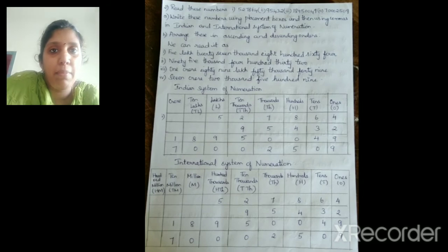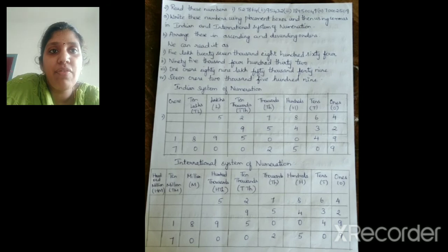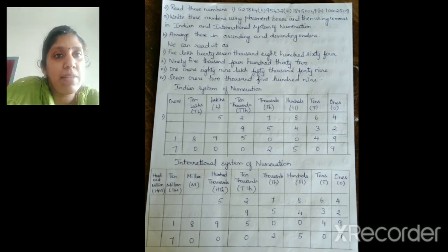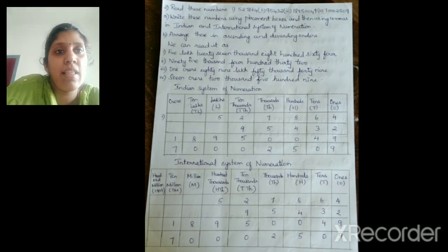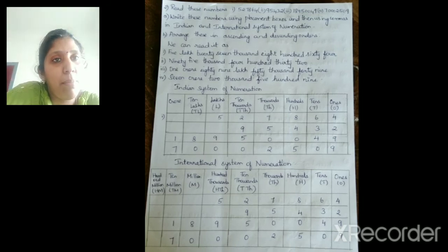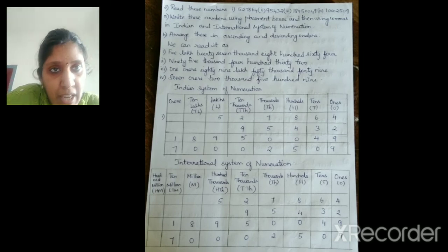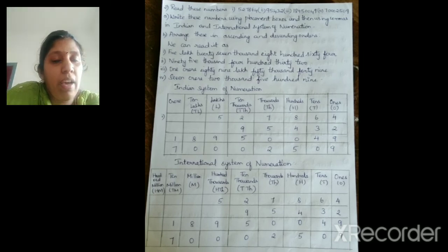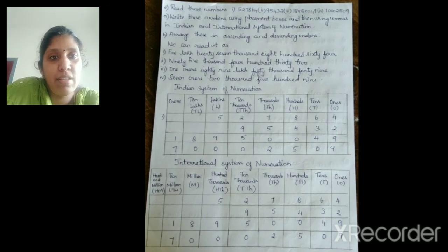Now we have to arrange them using placement boxes in both Indian and international systems. In Indian system, the places are: ones, tens, hundreds, thousands, ten thousands, lakh, ten lakh, and crore. In international system: ones, tens, hundreds, thousands, ten thousands, hundred thousands, million, ten million, and hundred million. All four numbers are arranged in both Indian and international systems.